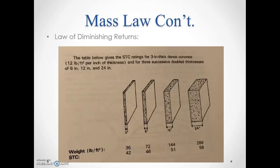This chart, from 'Architectural Acoustics' by David Egan, shows concrete partitions at 3, 6, and 12 inches — doubling mass each time. Yet the STC only jumps from 42 to 46 to 51 — a delta of about 6 per doubling. Think how inefficient it would be to go from a 6-inch wall to a 24-inch wall and only gain 12 STC points. It really illustrates the diminishing returns of simply adding mass.